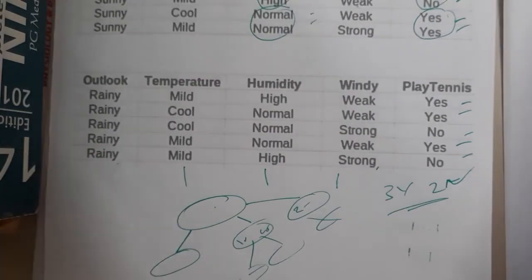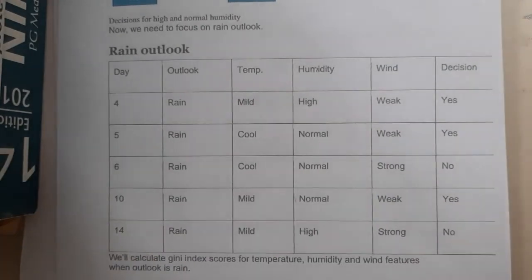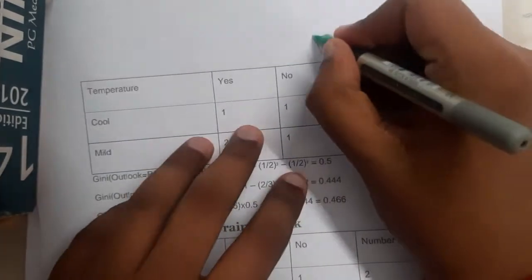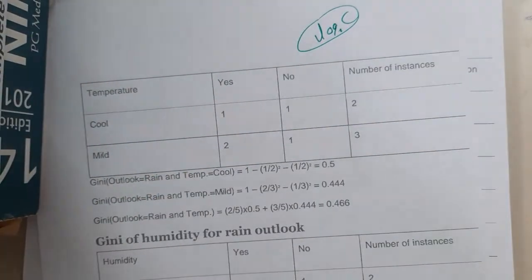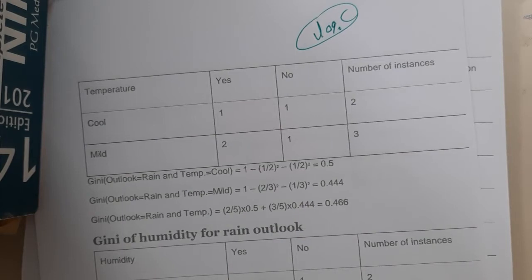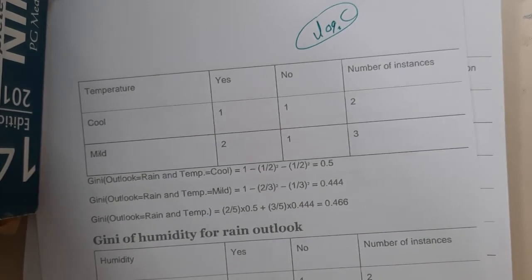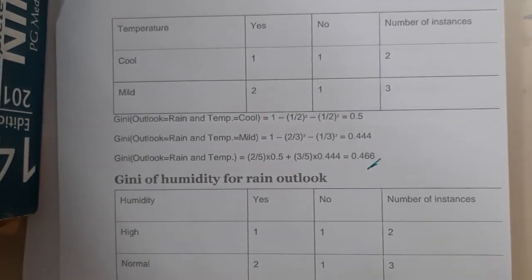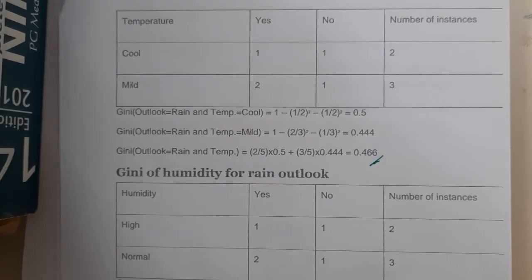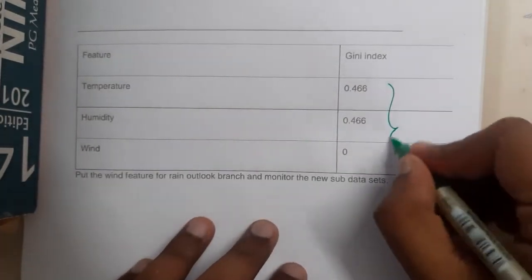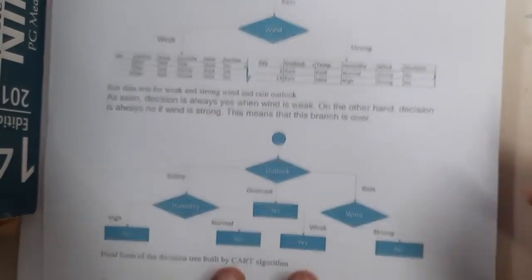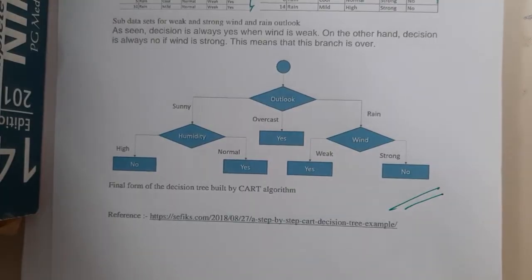Similarly, we take the Rainy subset table and repeat the same process. The main reason this method is easier is that there are no logarithm calculations — log calculations done multiple times are prone to silly mistakes. Using the Gini index, we find the minimum value and select the corresponding attribute. At the end, all leaf nodes resolve to either all Yes or all No, giving us the same final decision tree diagram.